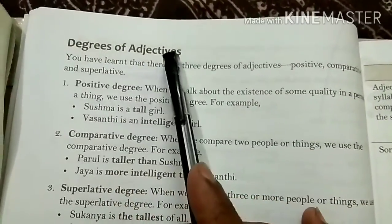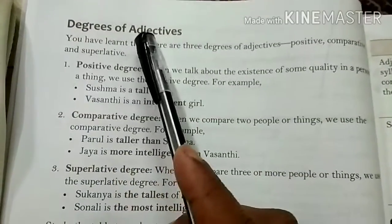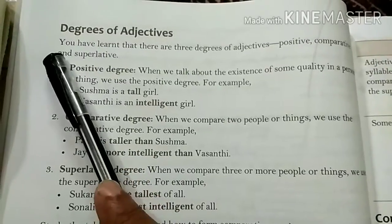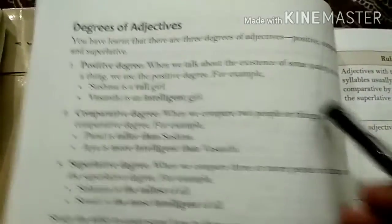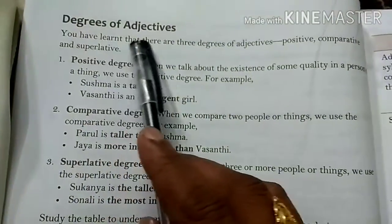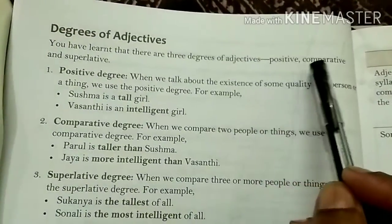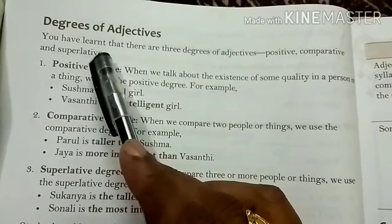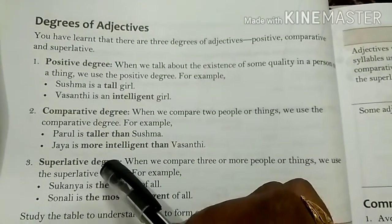After that, we will learn degrees of adjective. You are familiar with this term. There are three degrees in adjective: positive degree, comparative degree, and superlative degree. We will learn about each one by one.